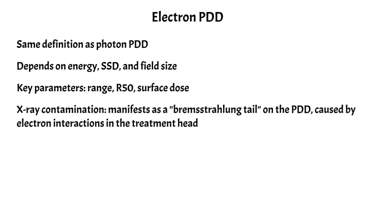Another thing unique to electron PDDs is that they consist of x-ray contamination, which really shows up as a bremsstrahlung tail on the PDD. It's really caused by interactions that the electrons have in the treatment head that produce bremsstrahlung radiation. You get a bremsstrahlung tail as a result, and we'll see a result of some of those tails in the following images.